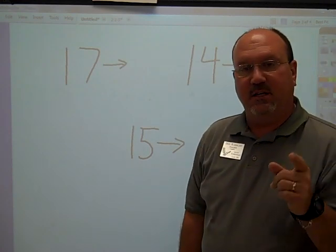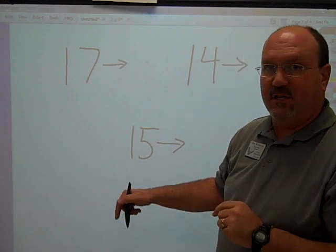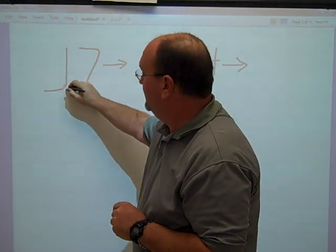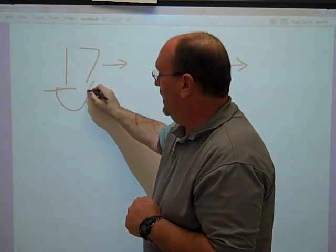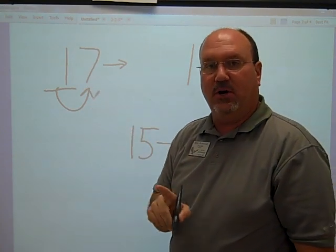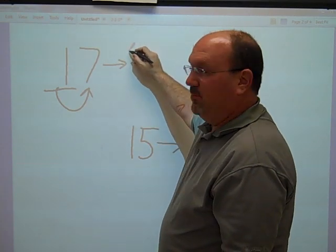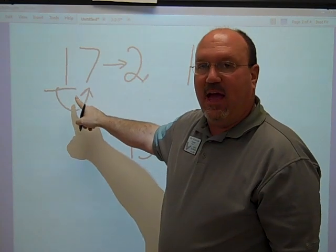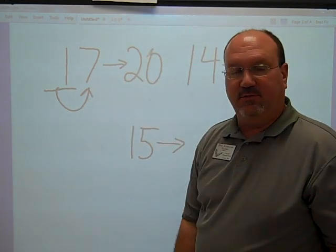If we're rounding to the nearest ten, underline the digit that you're rounding to. We're rounding to the nearest ten, so underline the tens digit — ones, tens. Underline the digit, look next door. We have the kids draw a little arrow. If that number is five or bigger, add one more to the digit — one plus one more is two. Everything after is a zero to the core. So 17 rounds to 20.